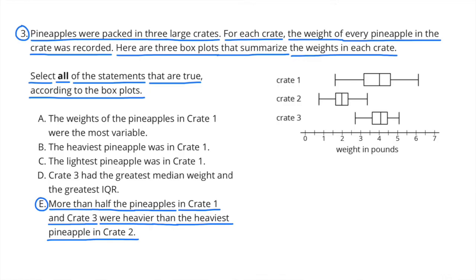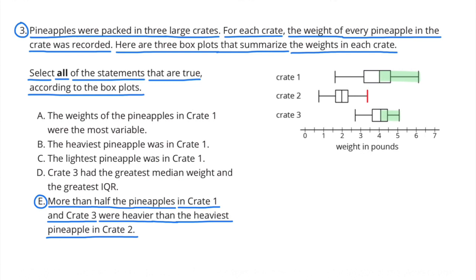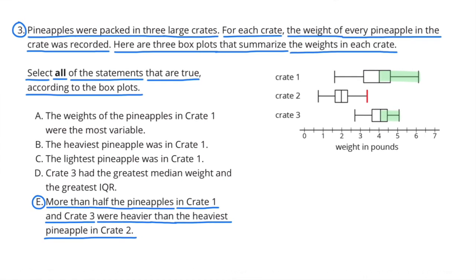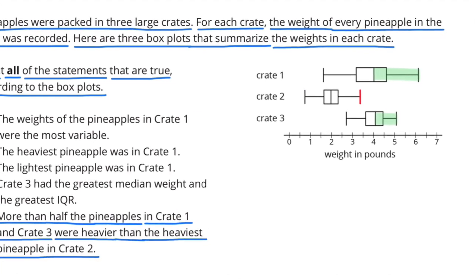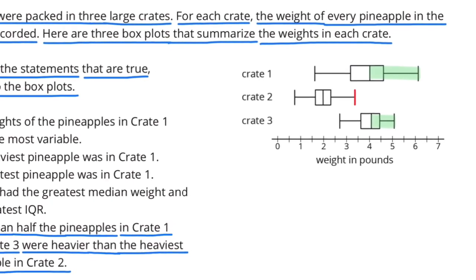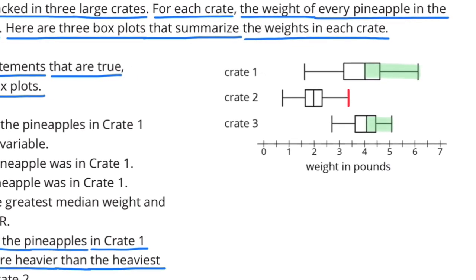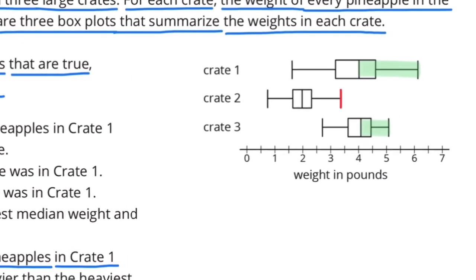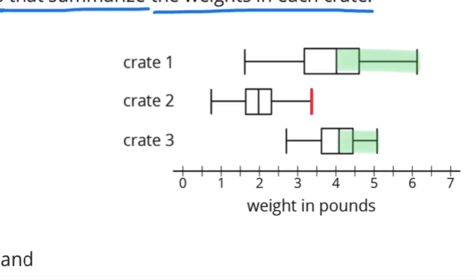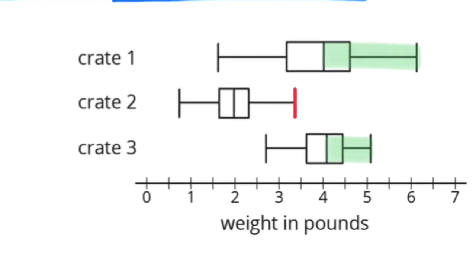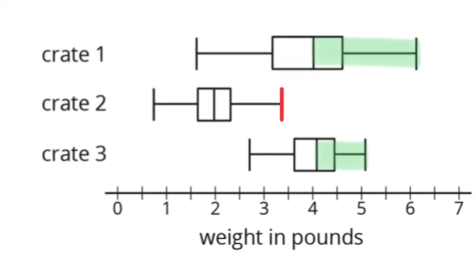Statement E: More than half the pineapples in crates 1 and 3 were heavier than the heaviest pineapple in crate 2. Yes, that's true, because more than half the pineapples in crate 1 and more than half the pineapples in crate 3 weigh more than the heaviest pineapple in crate 2. The heaviest pineapple in crate 2 is identified with a red line at just under 3.5 pounds, and more than half the pineapples in crates 1 and 3 weigh more than 4 pounds.